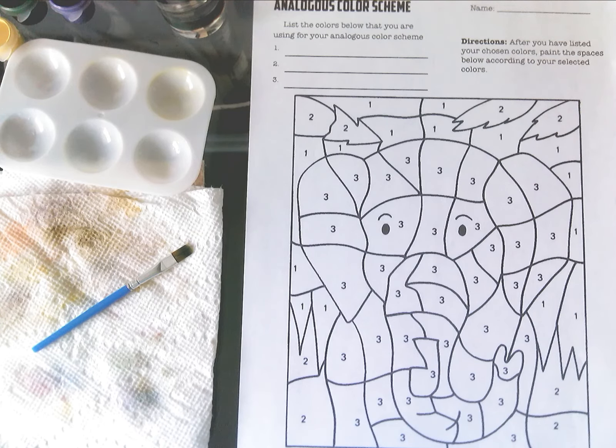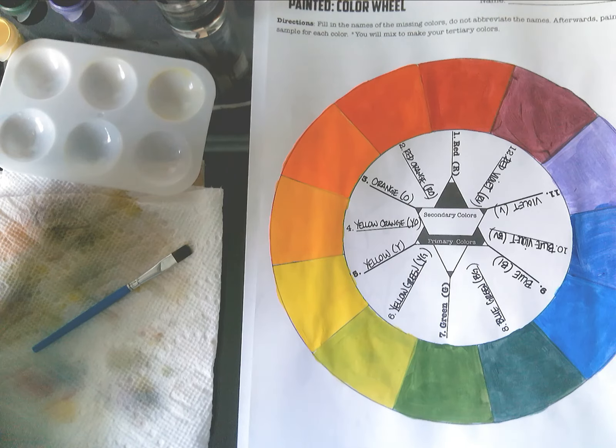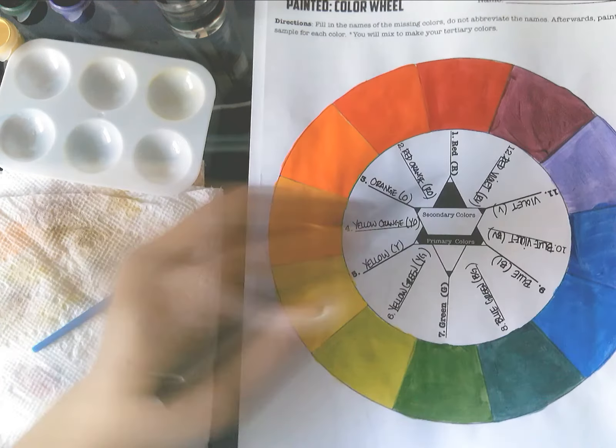If you remember from the introductory video, analogous means three colors beside each other on the color wheel. So you have your color wheel worksheet that you can reference, and you're going to pick three colors next to each other on the color wheel. Any three colors at all.